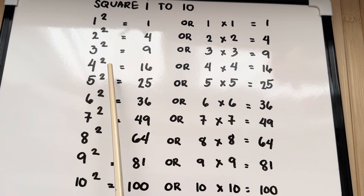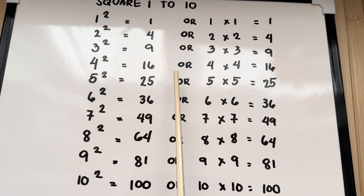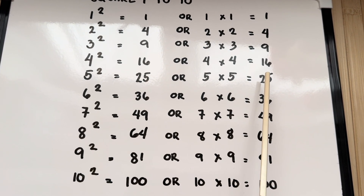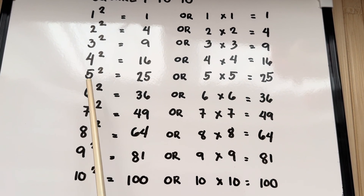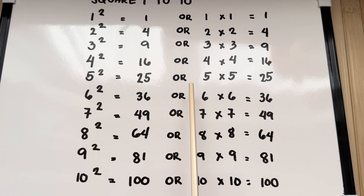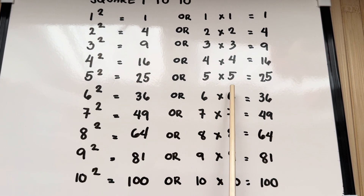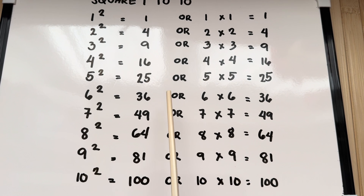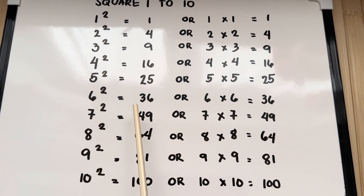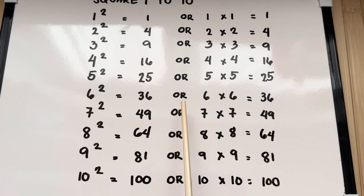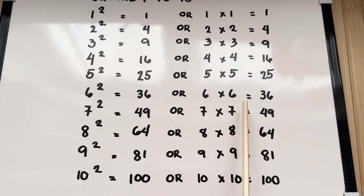4 squared is equals to 16, or 4 times 4 is equals to 16. 5 squared is equals to 25, or 5 times 5 is equals to 25. 6 squared is equals to 36, or 6 times 6 is equals to 36.